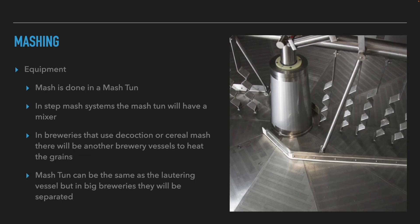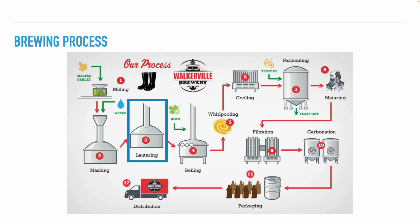The mash is done in a mash tun — a large vessel that has enough space to hold the grist and water. In systems that allow for step mash, the mash tun will have a mixer and some form of heating. Breweries that do a decoction mash will have another vessel to heat the grains. The mash tun can be the same vessel as the lautering tun, but in general breweries they will be separated to avoid bottlenecks and increase production. At the end of the mash process, we have a very sweet barley soup.